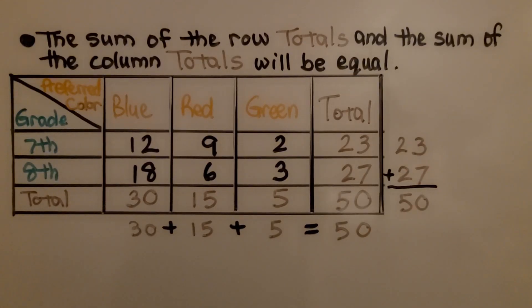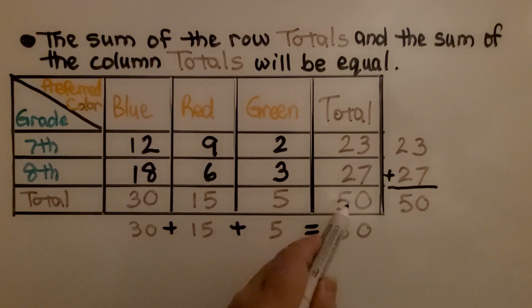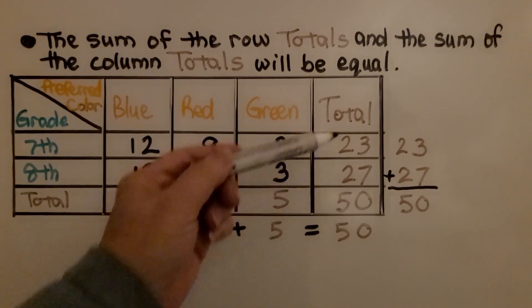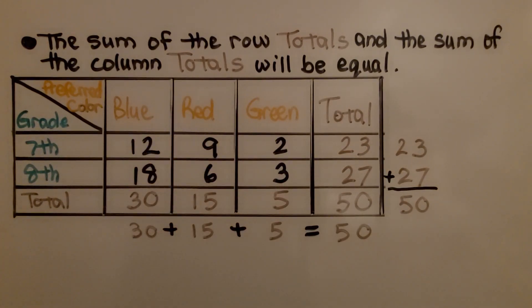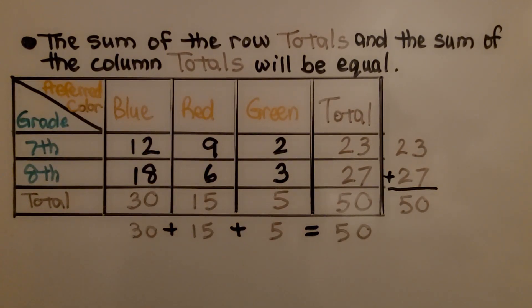The sum of the row totals and the sum of the column totals will be equal — they'll both be the grand total.